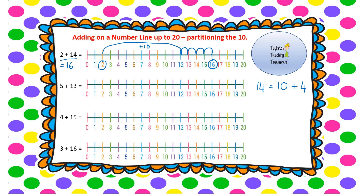Next: 5 add 13. Let's partition our 13 into a 10 and a 3 — a 10 from our tens column and a 3 from our ones column. I start at 5 and jump on 10 spaces first, so 5 add 10 gets me all the way to 15. I've added my 10; now I've got 3 more spaces to jump: 1, 2, 3. I've landed on 18, so 5 add 13 equals 18.